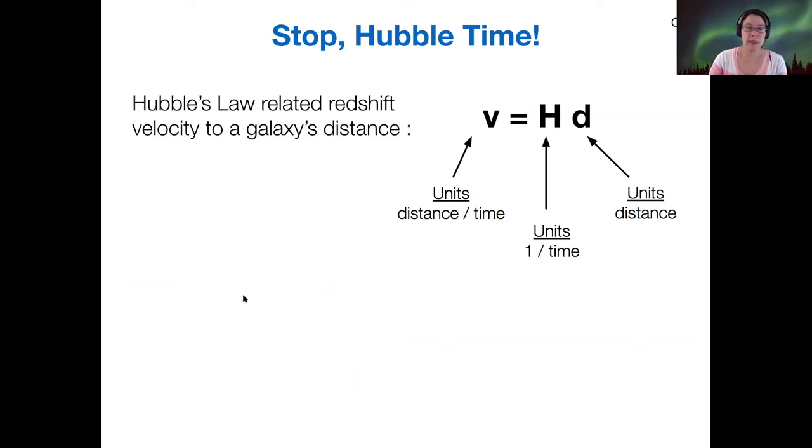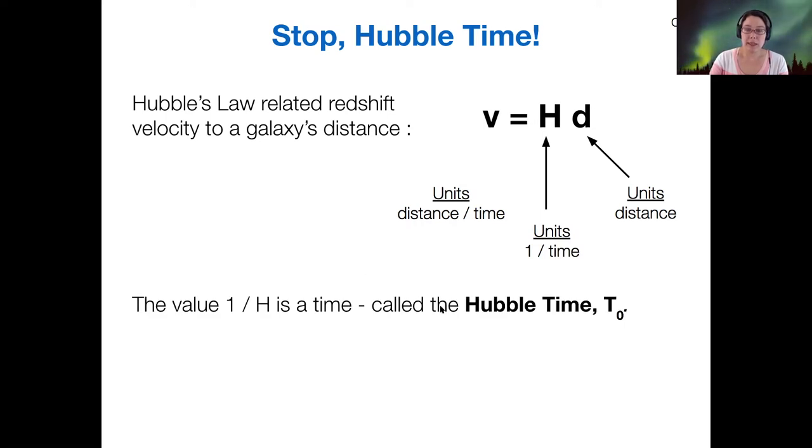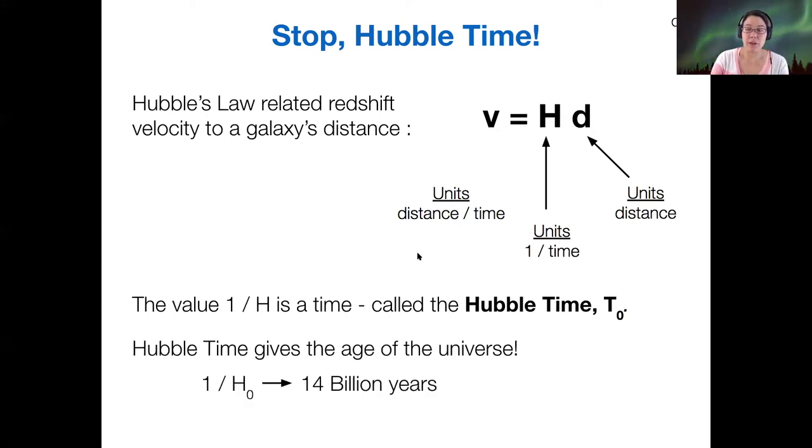So why is that interesting? Well, it gives us a specific time if we take one divided by Hubble's constant. Since Hubble's constant has units of one over time, one over Hubble constant gives you a unit of time. And we call this the Hubble time. So it's a special time that's related specifically to what the expansion rate of space is. So if you actually calculate one over H and do the unit conversion I mentioned on the previous slide, you get an age of nearly 14 billion years. It's sensitive to the exact value of the Hubble constant that you use.